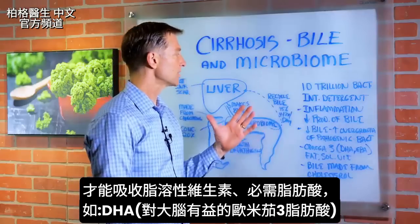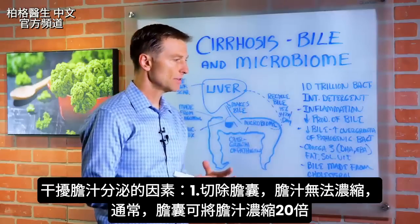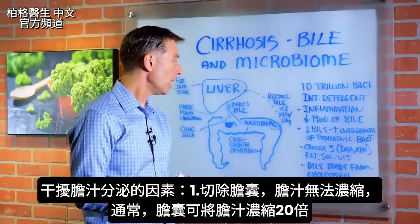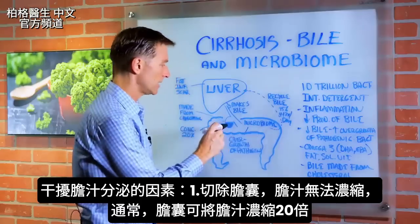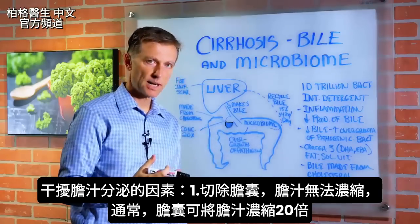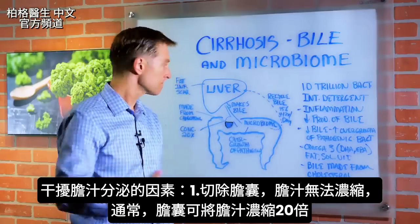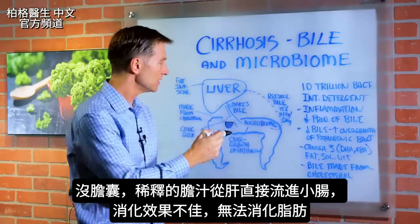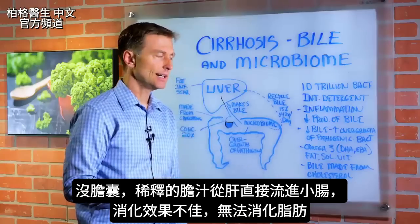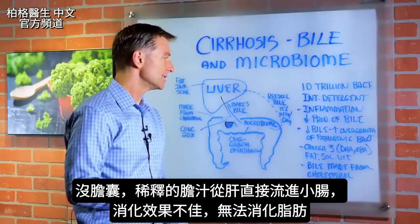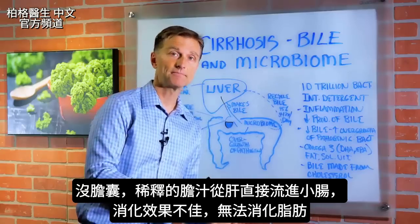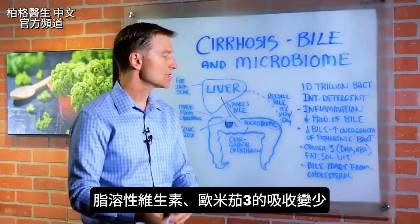So that's kind of the function of bile. There are many different things that can happen that can interfere with your bile production. One is you have the gallbladder removed — now you're not going to have concentrated bile anymore. Normally with the gallbladder, you're supposed to concentrate the bile up to 20 times. So if you don't have a gallbladder, it's not concentrated. It trickles down from the liver and goes to your small intestine, and it's not going to be as effective. You're going to have undigested fat, less fat-soluble vitamins, and less omega-3.